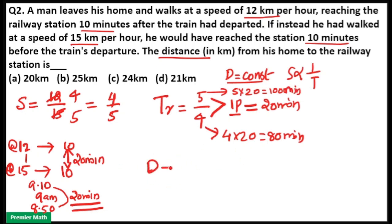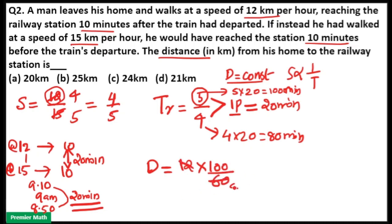Distance equals speed multiplied by time. Taking speed as 12 km per hour, the corresponding time is 5 parts, which equals 100 minutes, or 100/60 hours. So distance = 12 × (100/60) = 12 × 5/3 = 20 km. Therefore, option A — 20 km — is the answer.